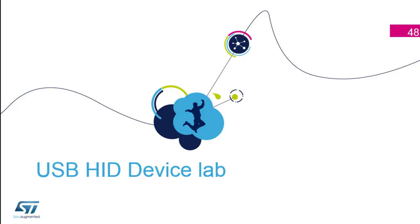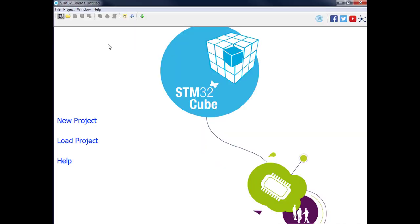We'll do a new hands-on - a funny one. We will define a mouse, meaning our STM32 will act like a mouse. The purpose: we will push the blue button and then the mouse on your PC will move. For this example we will start from scratch again because it will be straightforward - no major modification. We'll configure the oscillator in bypass mode, activate the OTG USB device, select the class, set the clock, and then generate.